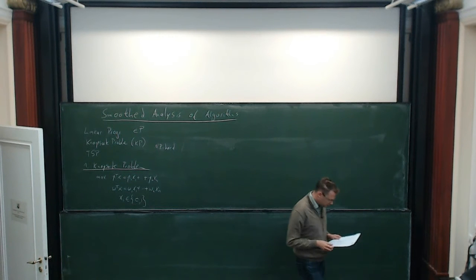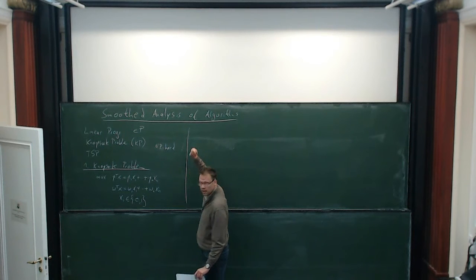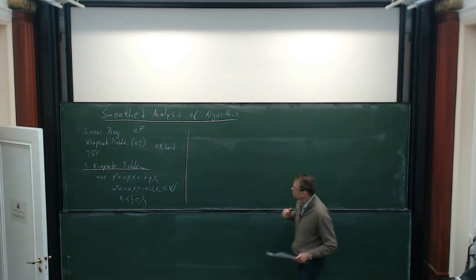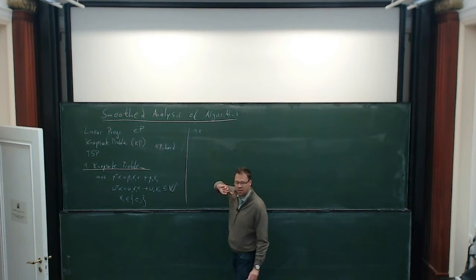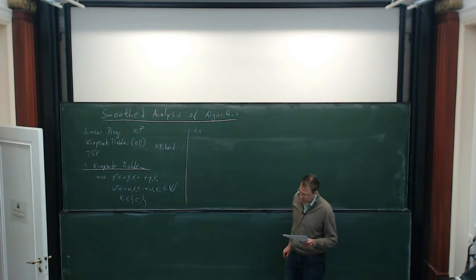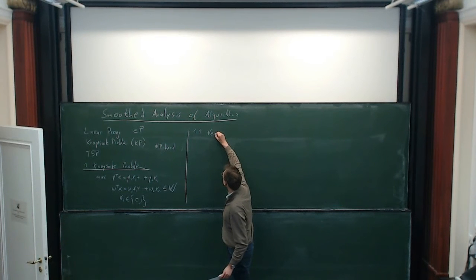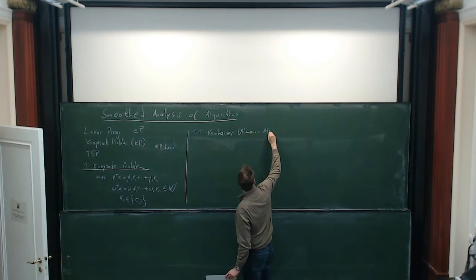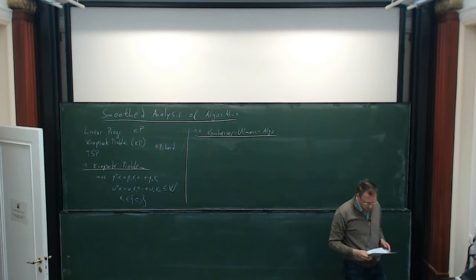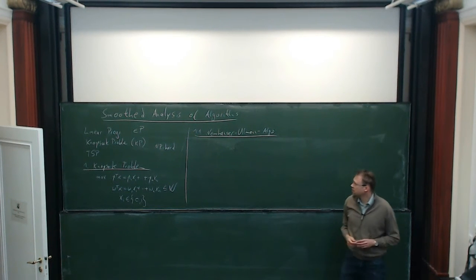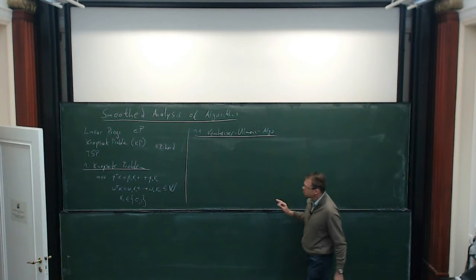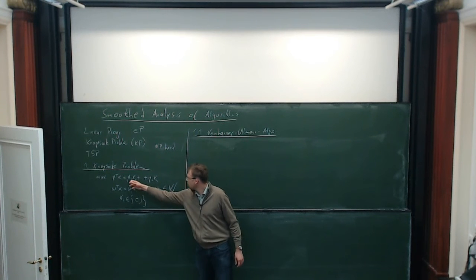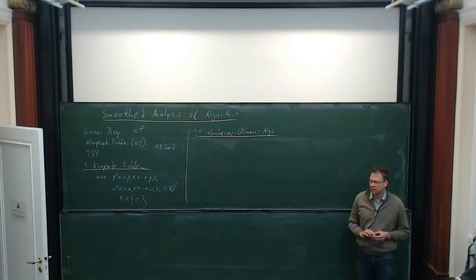That's the knapsack problem I'm going to study today. In order to solve it, there are multiple algorithms. I will present one algorithm developed by Nemhauser and Ullmann in 1969 — a quite old algorithm that solves the knapsack problem optimally. It's based on dynamic programming, but it's not the usual dynamic program you might have seen. There are dynamic programs with polynomial running time bounded by the largest profit or weight, but I'm not going to talk about those.